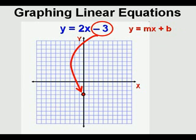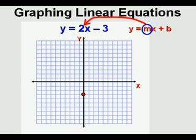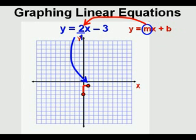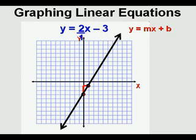We have a y-intercept of negative 3. Next we look at m, or slope, which is 2. To use the slope of 2 we make a fraction out of it: 2 over 1. Starting at the y-intercept, we move up 2 — that's the rise — then to the right 1 — that's the run. We mark that second point, then draw a line through the two points. This is the graph of y equals 2x minus 3.